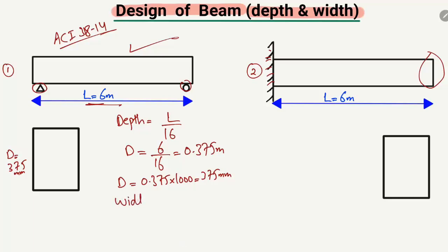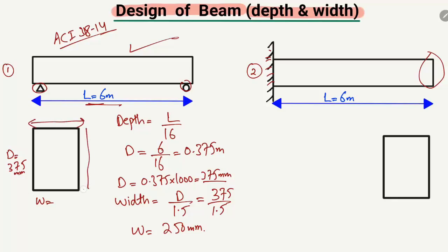Now for the width of the beam — you can find the minimum width equal to depth divided by 1.5, that is d divided by 1.5. The depth is 375 millimeters, so: 375 divided by 1.5 gives a minimum width of 250 millimeters. So the minimum depth is 375 mm and minimum width is 250 mm for a simply supported beam.